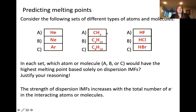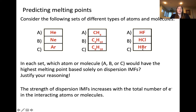We can apply similar reasoning to these hydrocarbons, which are all non-polar molecules, in that the largest hydrocarbon would be predicted to have the strongest dispersion forces, and therefore the highest melting point. In the case of the diatomic molecules listed in the third set, just based on intermolecular forces alone, we would expect that HBr would have the strongest intermolecular forces, because it is the biggest molecule and has the largest electron cloud.